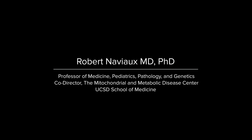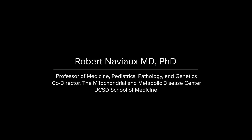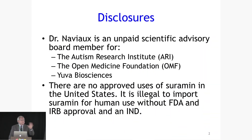I'll be talking about mitochondrial autism. My disclosures are that I'm an unpaid scientific advisor from the Research Institute of Medicine and Yuba Biosciences. An important disclosure for everybody here is that there are no approved uses of the drug I'm going to talk about, Suramin, in the United States, and it is illegal to import Suramin for human use without FDA approval in the context of a human clinical trial.